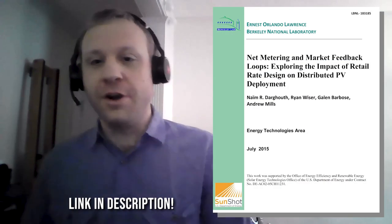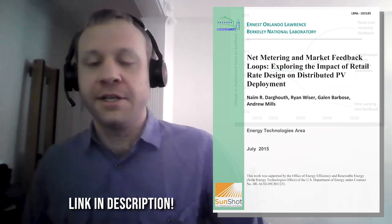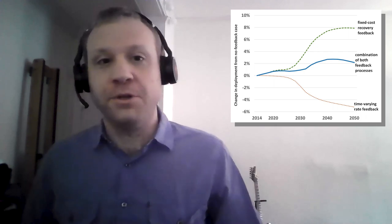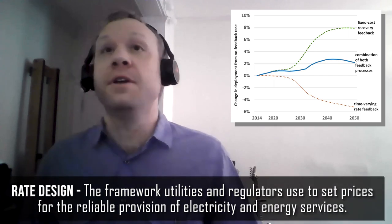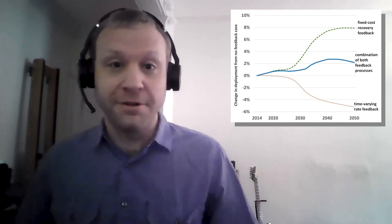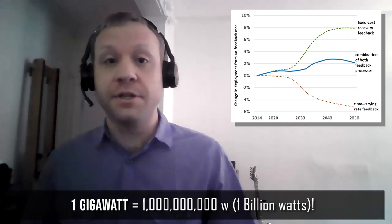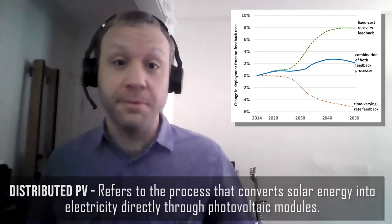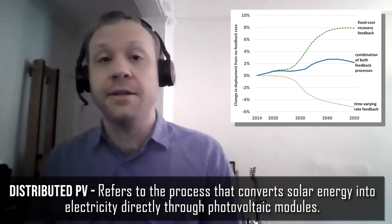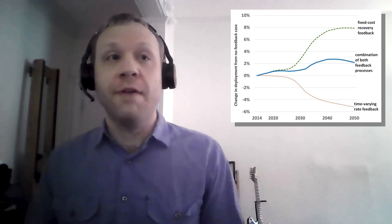What can you tell us about the first graph? This graph is out of a 2015 article that talks about net metering and market feedback loops. Basically, the authors are looking at the relationship between rate design and distributed PV growth in the U.S. The bottom line is that PV is going to grow gangbusters over the next decades — through the middle of the century we're talking tens or hundreds of gigawatts of growth in installed distributed PV.